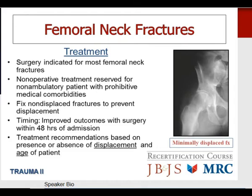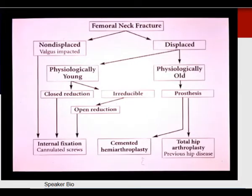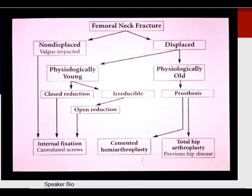This treatment algorithm is helpful. First, determine whether the fracture is displaced or non-displaced. If non-displaced or valgus impacted, internal fixation with cannulated screws is preferred. If displaced in a physiologically young patient, closed reduction of the femoral neck is attempted; if anatomical reduction cannot be obtained, open reduction is indicated, followed by fixation with cannulated screws. If displaced in a physiologically old patient, prosthetic replacement is the preferred treatment — either hemiarthroplasty or, in a young active patient or one with pre-existing hip disease, total hip arthroplasty.